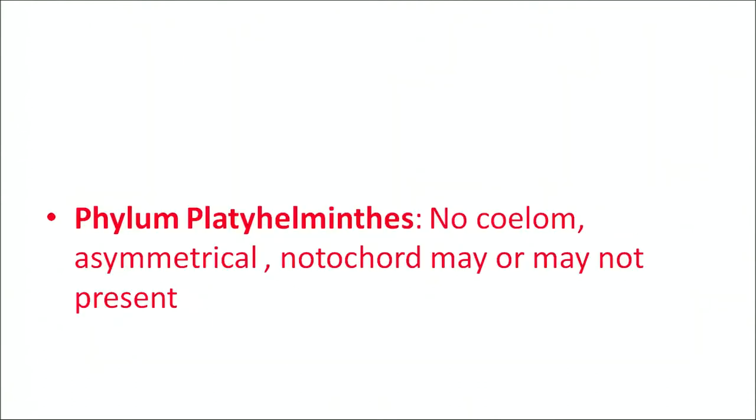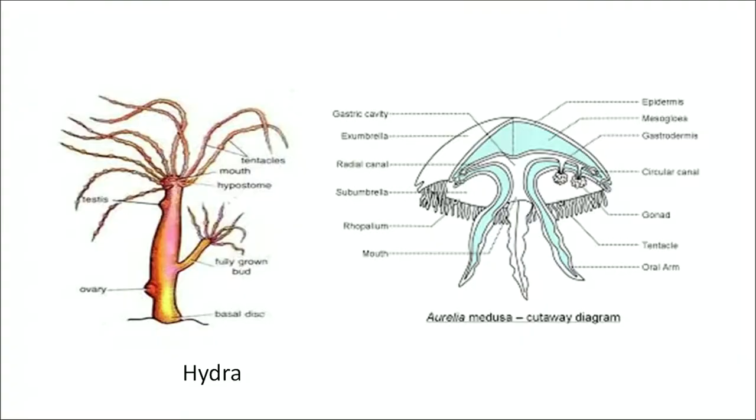The third phylum we are going to discuss is phylum Platyhelminthes. It has no coelom — it is acoelomate. It is bilaterally symmetrical. Notochord may or may not be present. Flatworms belong to phylum Platyhelminthes.